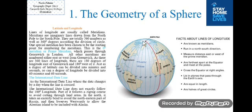The International Date Line, or IDL, is where the date changes by a day when the line is crossed. The International Date Line does not exactly follow the 180-degree longitude. Part of it follows a zigzag course to avoid cutting through land areas. In the north, it takes an easterly bend to avoid the northeastern part of Russia, and then curves westward to allow the Aleutian Islands to be included with Alaska.